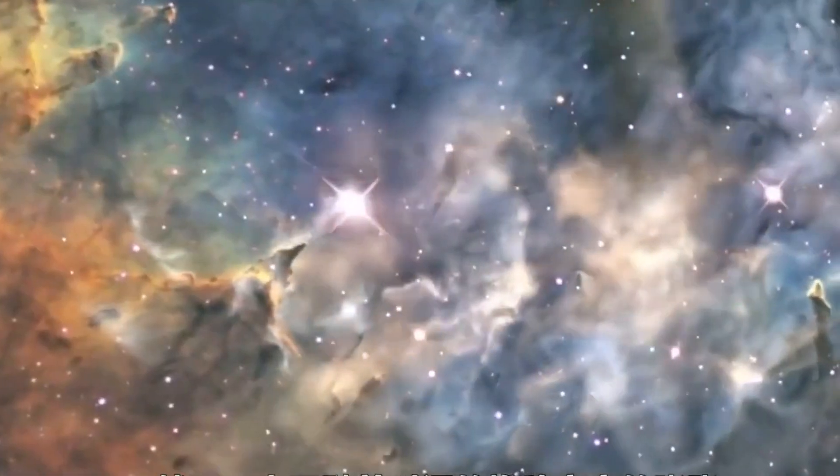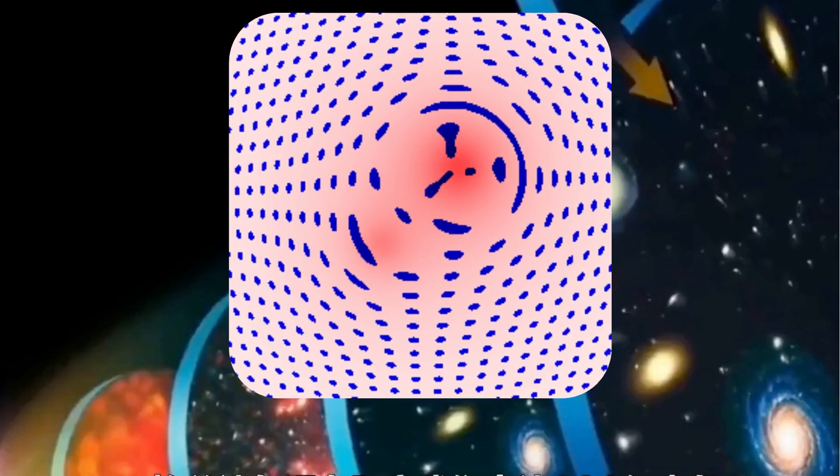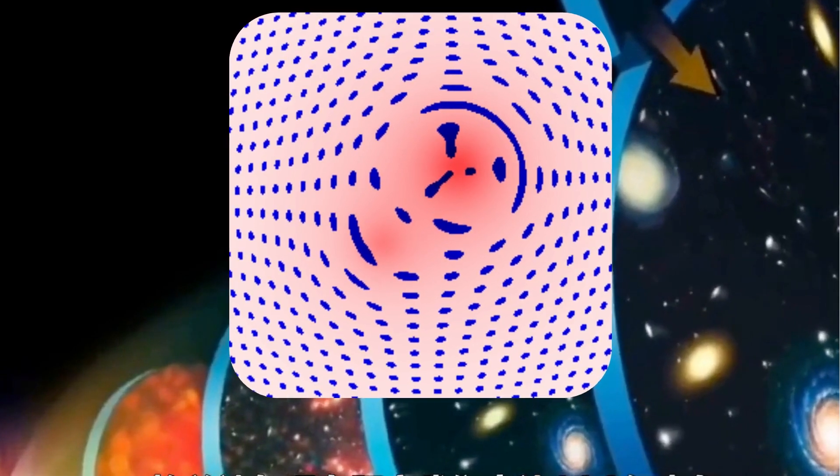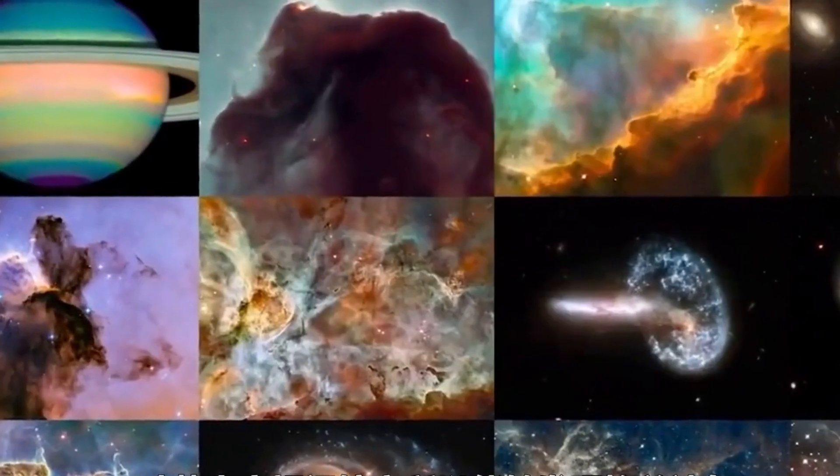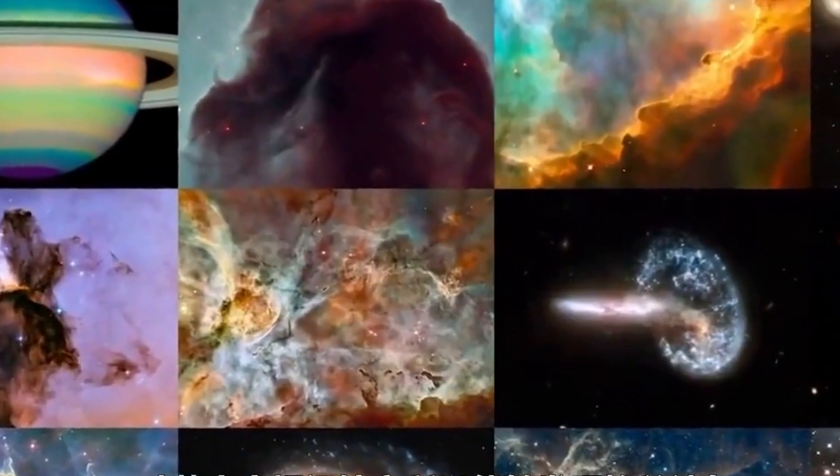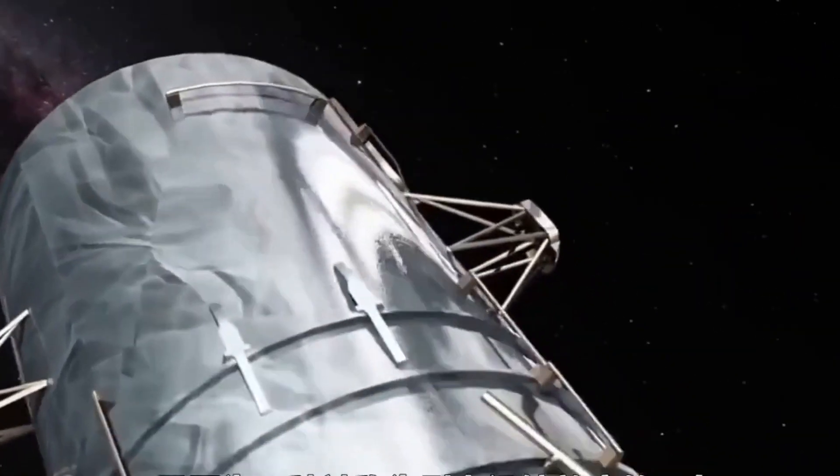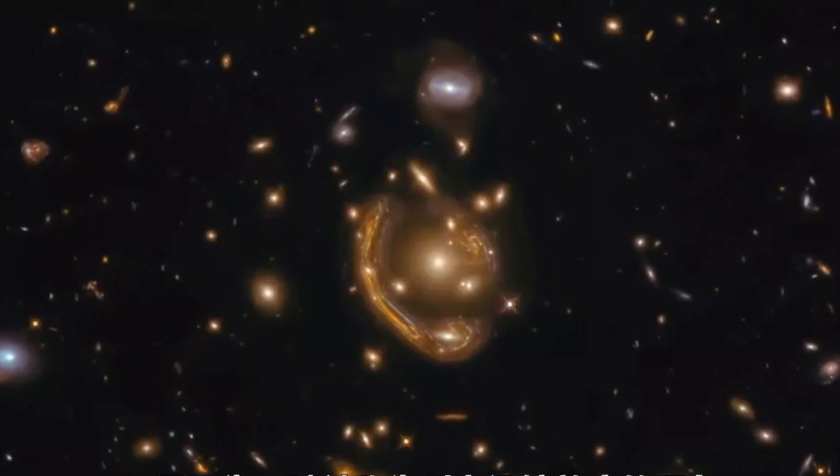The Hubble Space Telescope was able to spot Earendel using a phenomenon known as gravitational lensing. This phenomenon occurs when the gravitational pull of a massive foreground object bends and amplifies the light from a more distant celestial body.